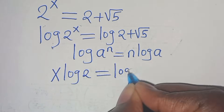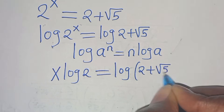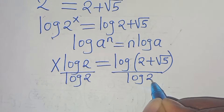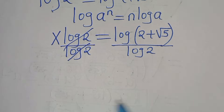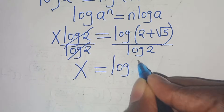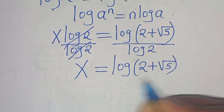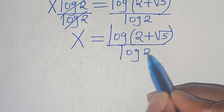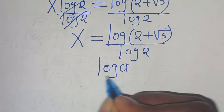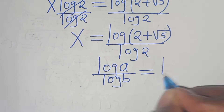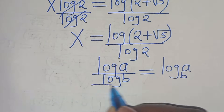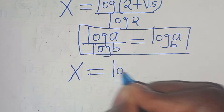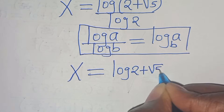Dividing both sides by log 2, we get x equals log(2 + √5) divided by log 2. Since log a over log b equals log a to base b, applying the change of base property gives us x equals log base 2 of (2 plus square root of 5). This is our value of x.